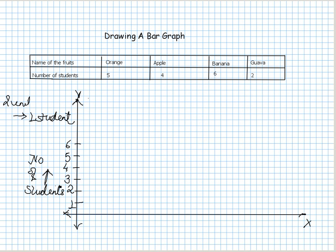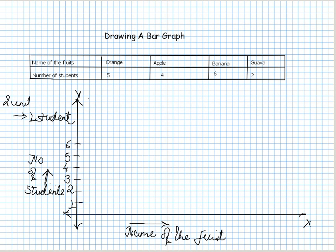We need to write on the y-axis what it is representing — the number of students. And on the horizontal axis, we write the name of the fruit. Now we have to represent first the orange. Five students would like to have orange, so let's draw the bar for it.